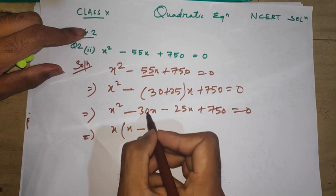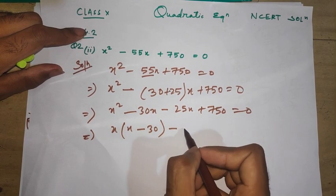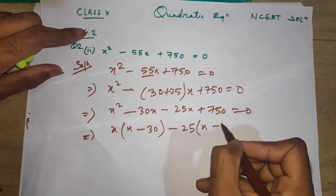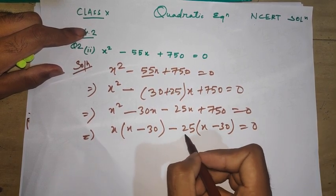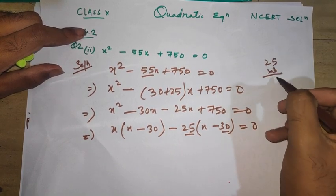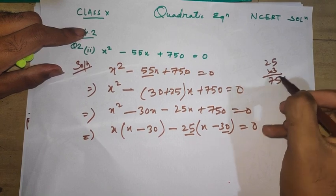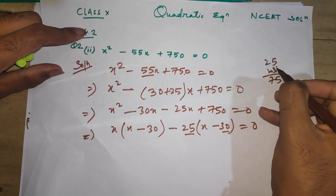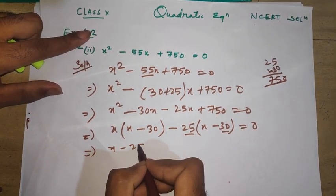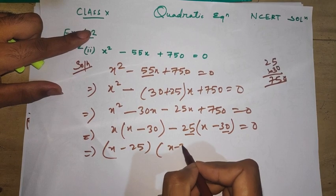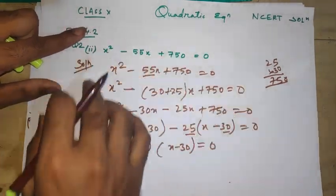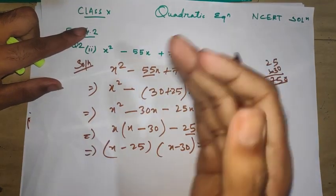x is common, so I'm going to write x(x - 30). On this side I'm going to take out 25 and write -25(x - 30). If you multiply 25 times 30 you get 750, so this is correct.